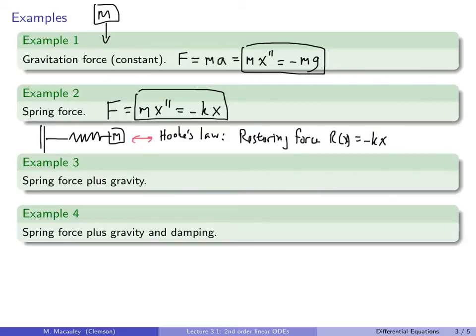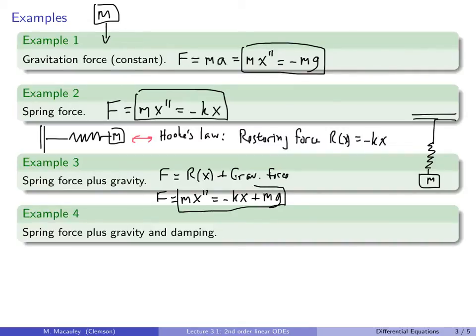For the third example, let's put these together, spring force plus gravity. So here we have, like, maybe a hanging spring, a hanging mass in the spring. So forces add. Let's write this as F is the restoring force plus the gravitational force. And so that means that F equals m times x double prime equals negative kx plus mg. So here's our second-order equation.